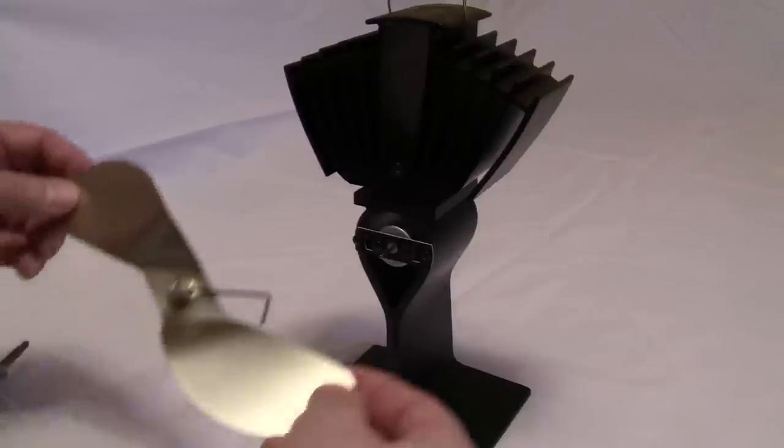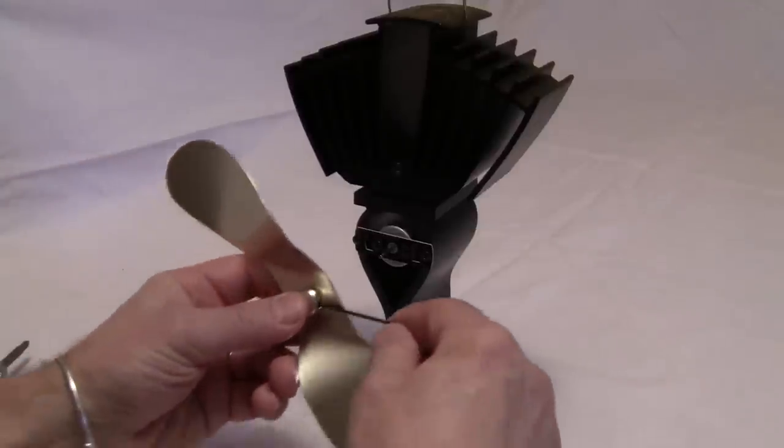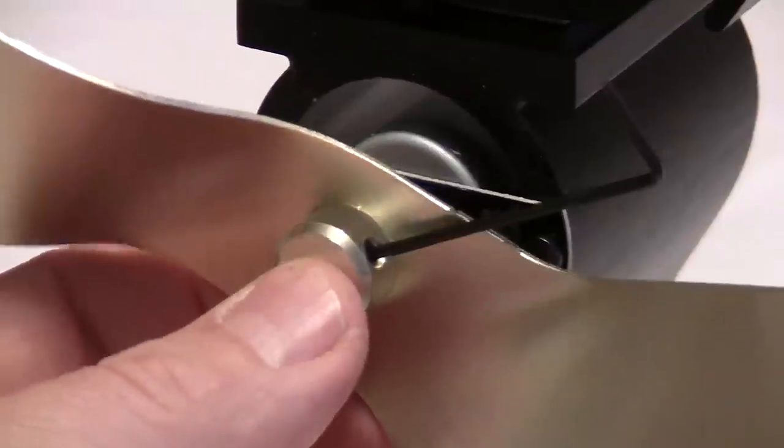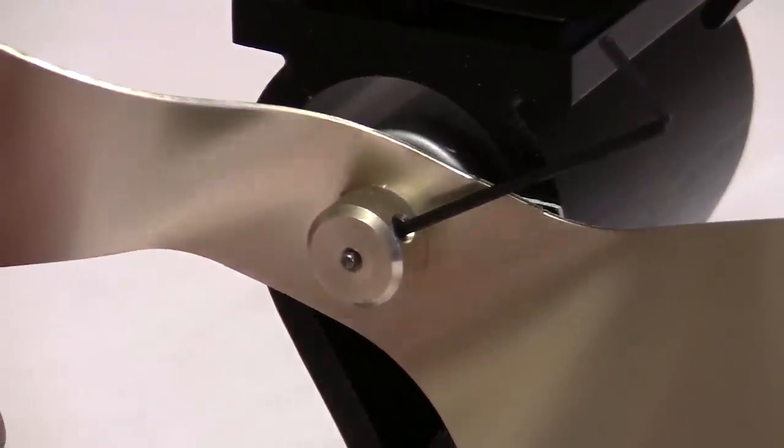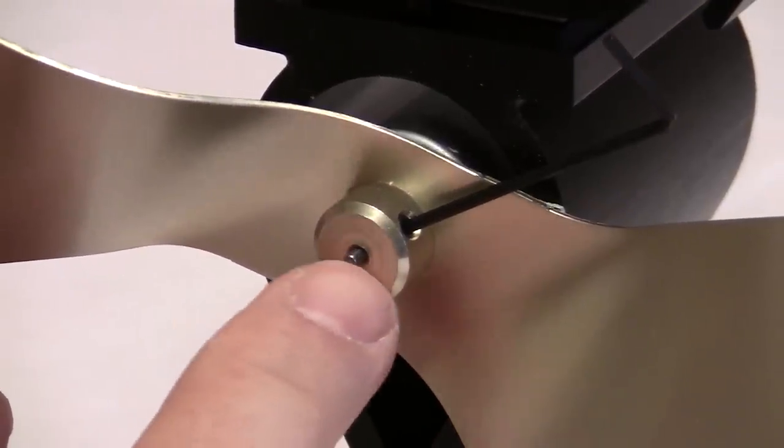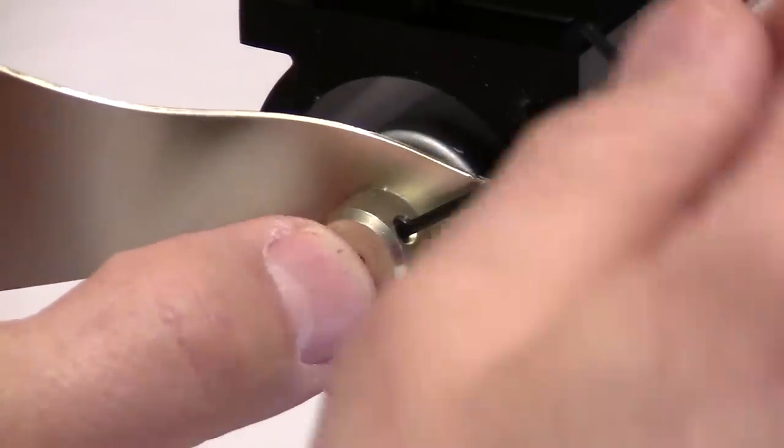Next what we want to do is take our blade and put it back on the hub, making sure that the edge of the unit is flush.